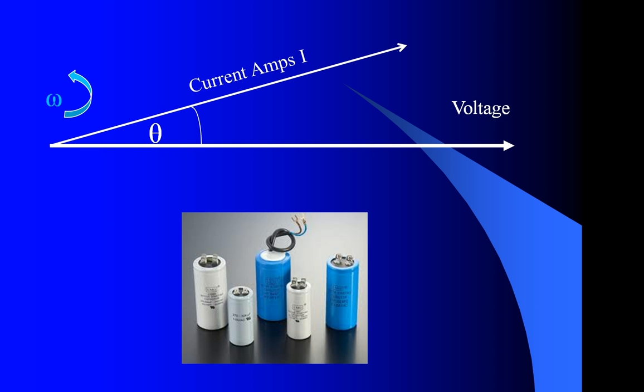Also, in the case of capacitance, the current is found to lead the voltage by some angle theta, and this is useful in correcting the power factor caused by inductances.